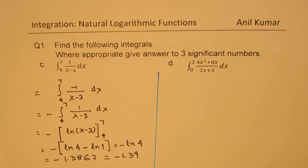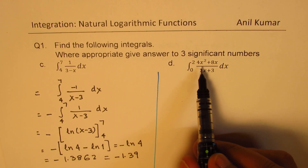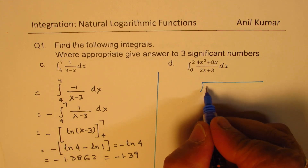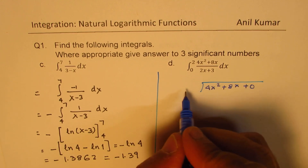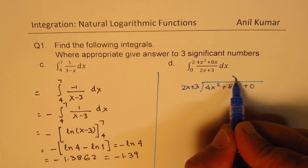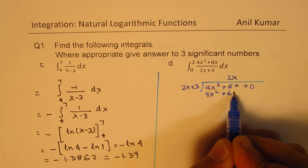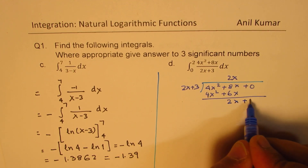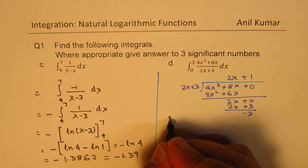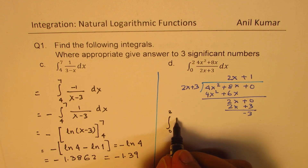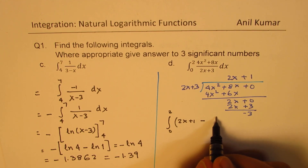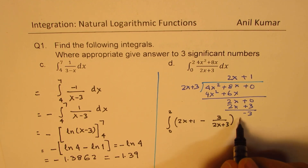Now let's look at Part D: the definite integral from 0 to 2 of (4x squared plus 8x) over (2x plus 3) dx. Again, we divide the numerator. Dividing 4x squared plus 8x by (2x plus 3): multiply (2x plus 3) by 2x to get 4x squared plus 6x; subtracting gives 2x. Then multiply (2x plus 3) by 1 to get 2x plus 3; remainder is minus 3. So the integrand becomes 2x plus 1 minus 3 over (2x plus 3).